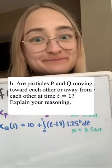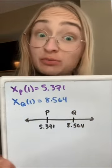Now pause for part B. To check if P and Q are moving towards each other, we need to know their positions and the signs of their velocities. We already found their positions at time 1 in part A.